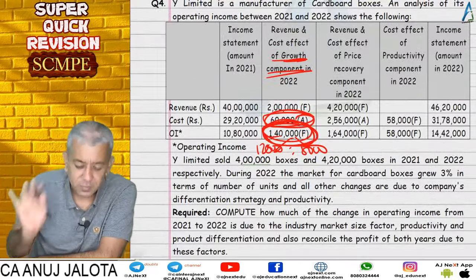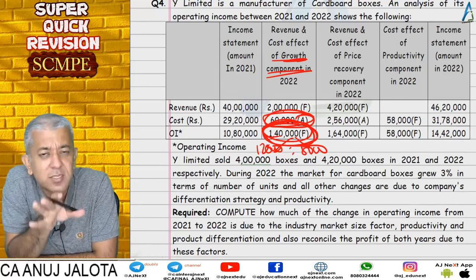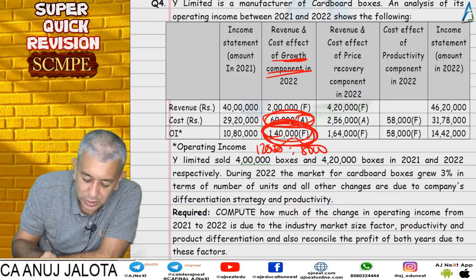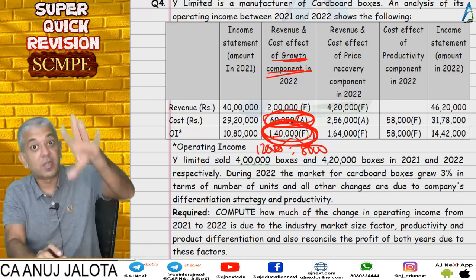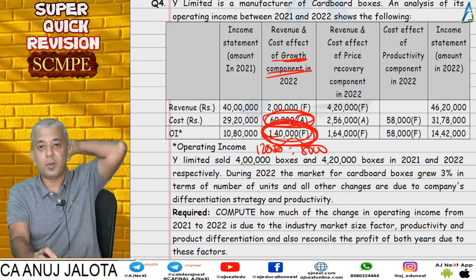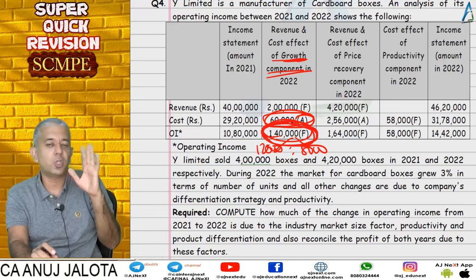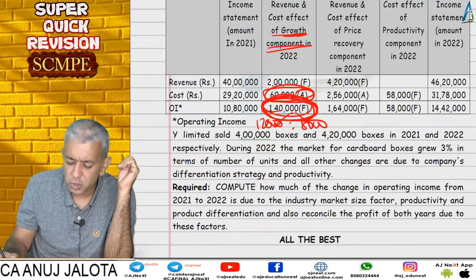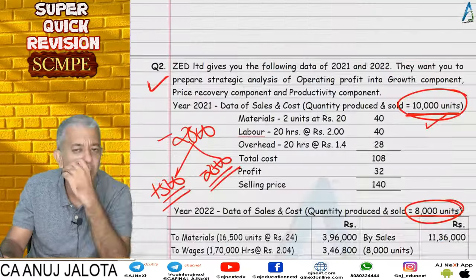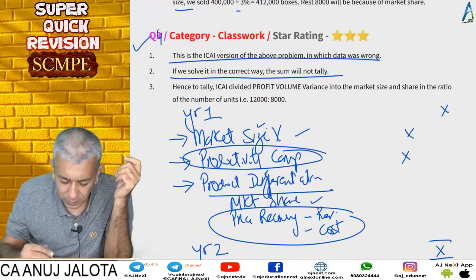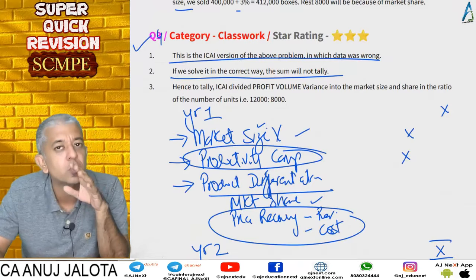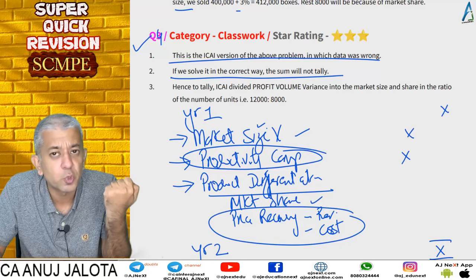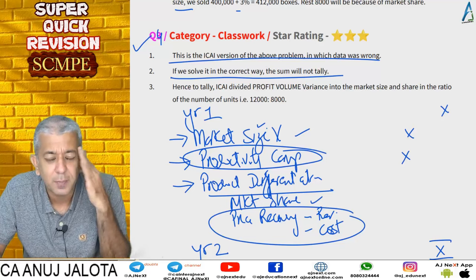Questions 3 and 4 were more or less the same, except for those two variance figures. Question 3 was perfectly correct with adjusted numbers, while ICAI's exam version had errors they didn't verify. If in future exams ICAI again asks a wrong question, you now know how to handle it — divide their given profit volume variance among market size and market share in the ratio of units. This chapter was quite small and concise. See you in the next lecture!